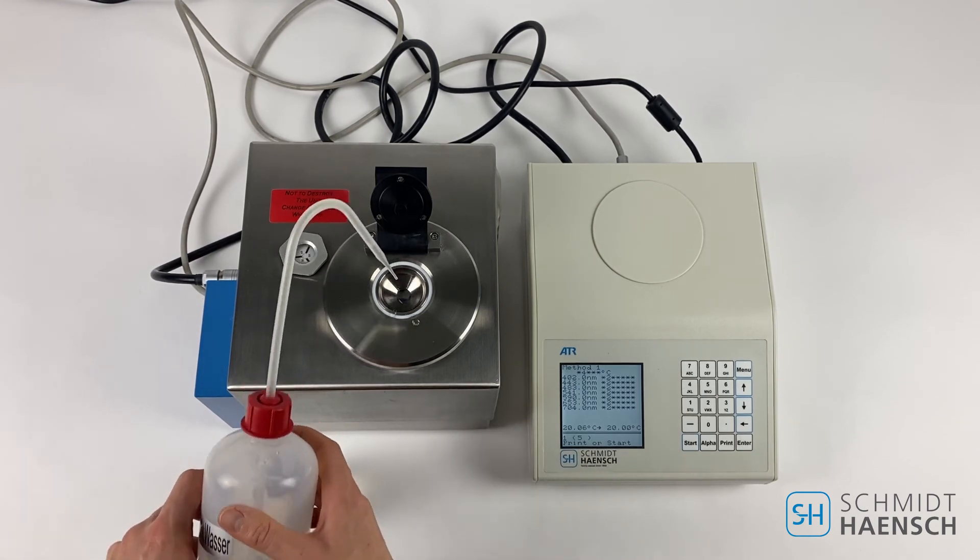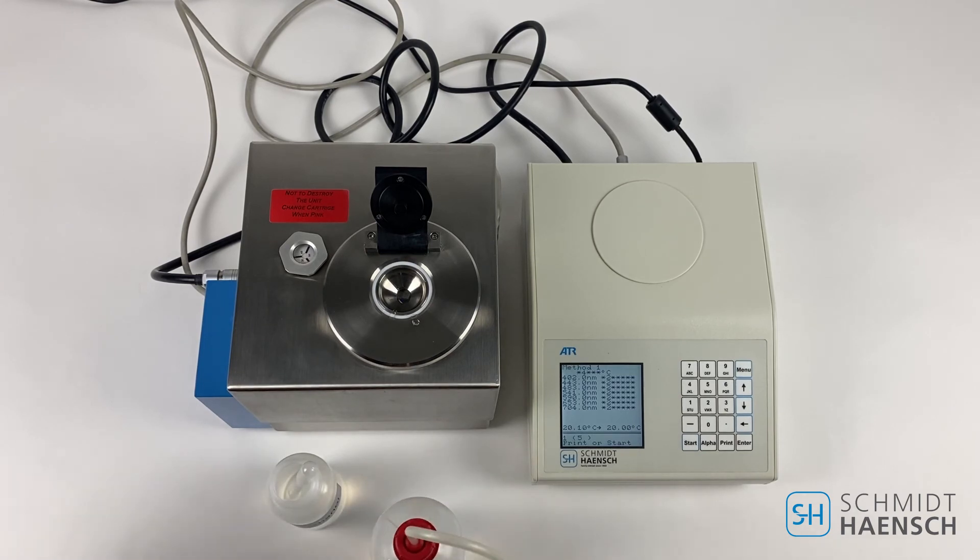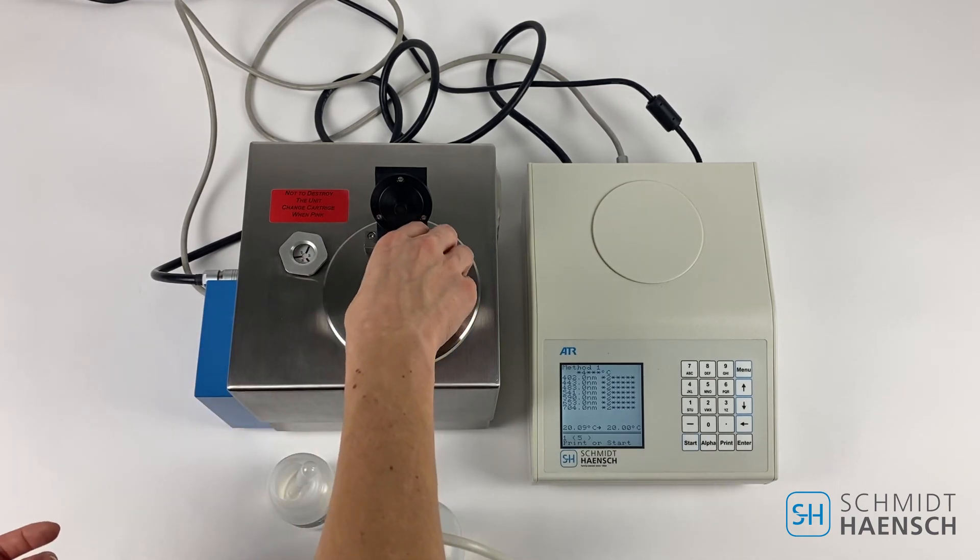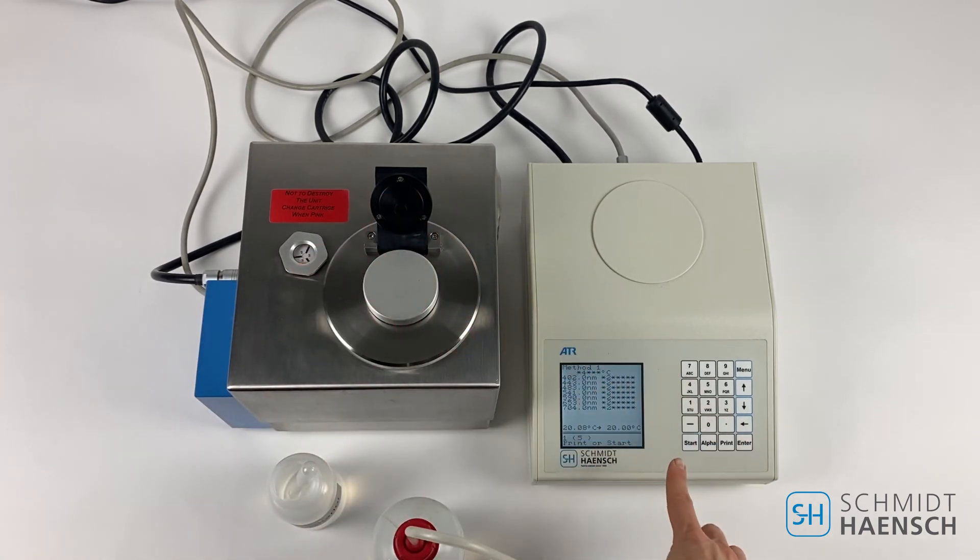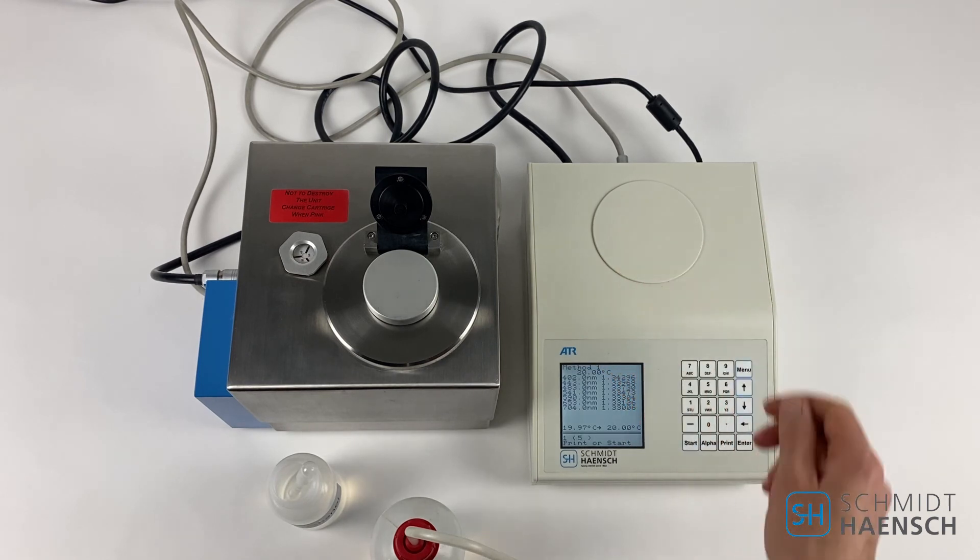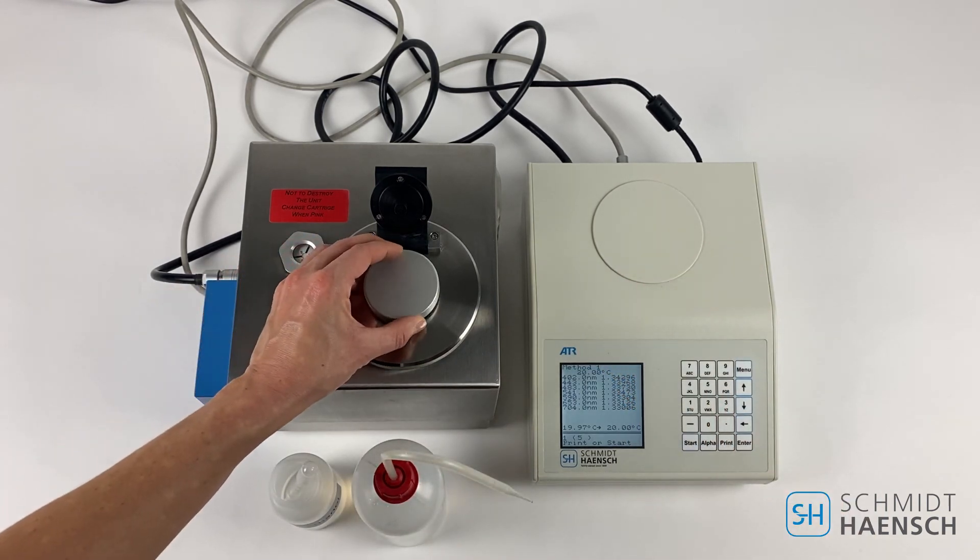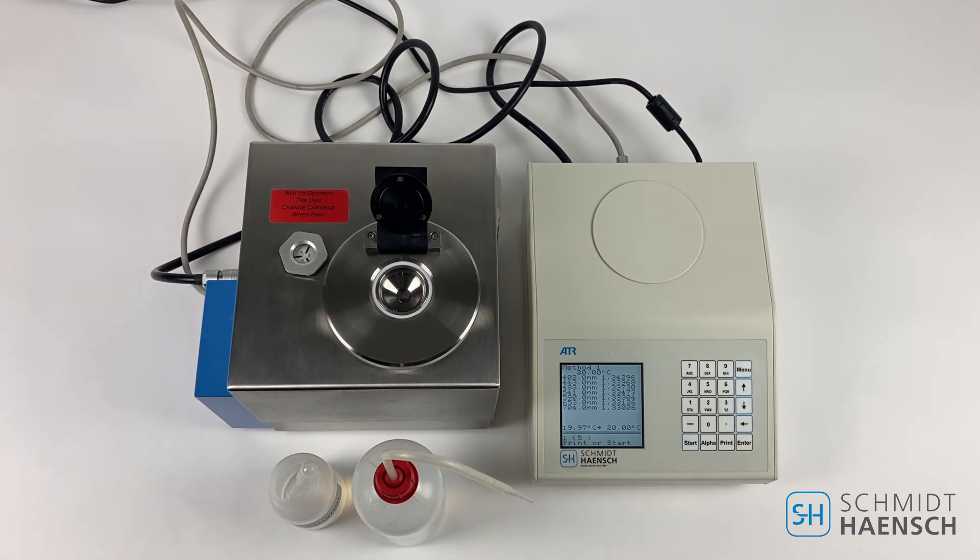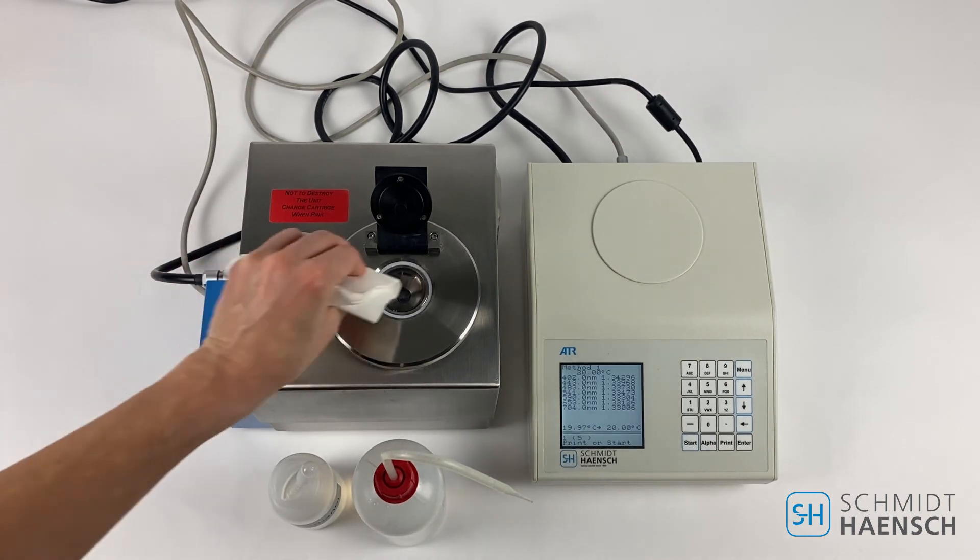Close the lid and measure. The distilled water should be showing 590 wavelength and 1.333 refractive index. Then our instrument is calibrated correctly and measuring correctly.